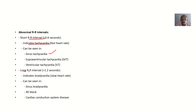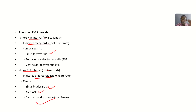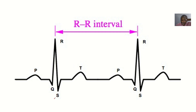For a long R-R interval — that means the R-R interval is more than 1.2 seconds — it can indicate bradycardia, meaning the heart is beating too slow. It can be seen in sinus bradycardia, atrioventricular block, and cardiac conduction system disease.